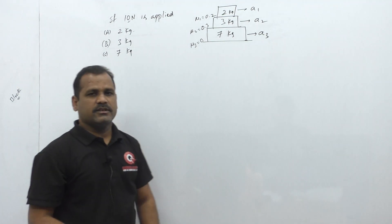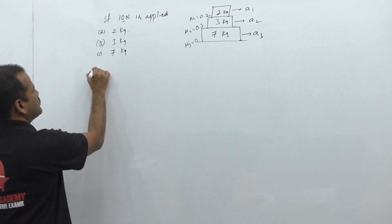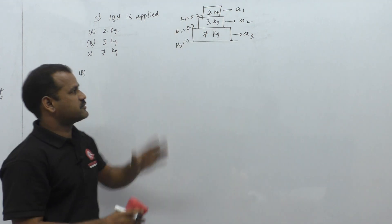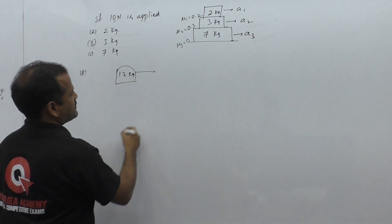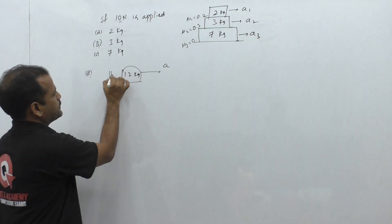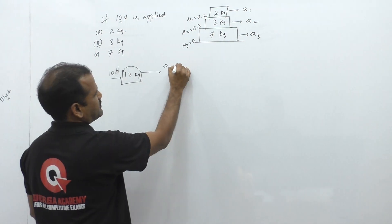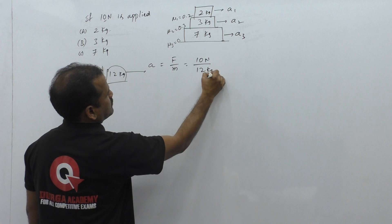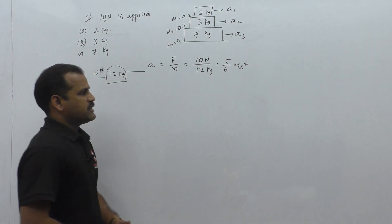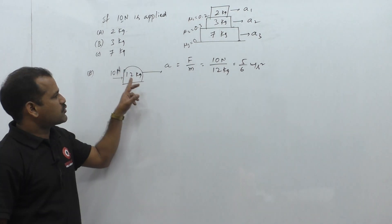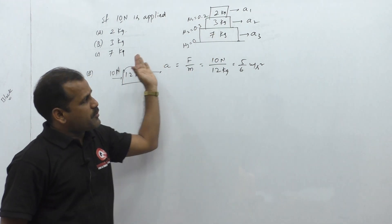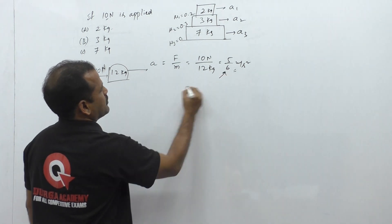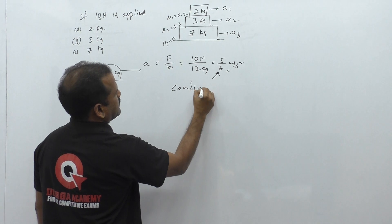To solve this problem, if all three blocks move as one combined object with total mass 7+3+2 = 12kg, and a 10 newton force is applied, the combined acceleration is force divided by mass: 10 divided by 12 equals 5/6 meters per second squared. This is the combined acceleration possible for the system.